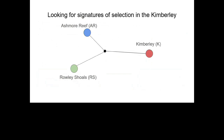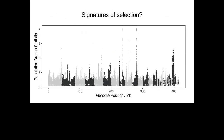So let's get back to our question: we want to scan the genome and look for parts where we've seen signatures of strong selection in the Kimberley. One way to do that is to look where the branch length on a population tree is longer than expected, and we can calculate that with an allele frequency-based measure called the population branch statistic. We can do a classical Manhattan plot — a big scan across the genome — and you can see a couple of big spikes that might be interesting.